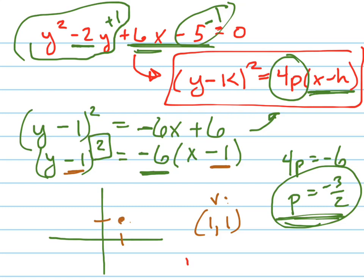p is negative 3 halves, which means 3 halves to the right of this, which means right there at 2 and a half, because that's 1 and a half to the right, is my directrix. There's my directrix.